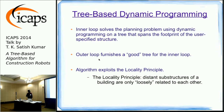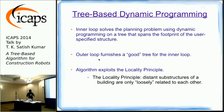We propose a tree-based dynamic programming algorithm to salvage planning for the Termes domain. The algorithm has an inner loop and an outer loop. The inner loop uses dynamic programming on a tree that spans the footprint of the user-specified structure. The outer loop searches for a good tree to furnish to the inner loop. Together, the algorithm exploits the locality principle: distant parts of a building are largely unrelated, and DP on a spanning tree leverages that computationally.